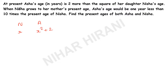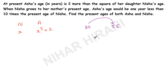The next statement says: when Nisha grows to her mother's present age. Let me give you a simple example. Say I am 30 years old and my father is 55 years old. If I want to reach my father's age, I have to wait 25 years. After 25 years I will reach that age. How did I get 25? 55 minus 30 — father's age minus my age.